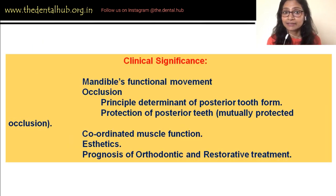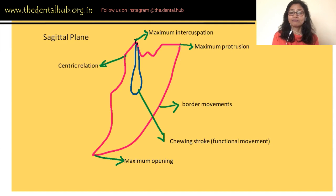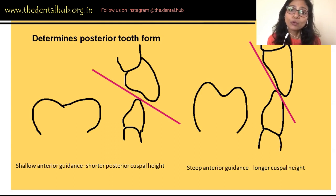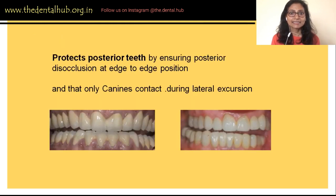The clinical significance of anterior guidance is that it is a principal determinant of the functional movement of the mandible and should cause no hindrance to it. Anterior guidance is part of the envelope of function — the path the mandible follows during function — specifically the superior component of this envelope. It is also a principal determinant of occlusion, ensuring posterior disocclusion during edge-to-edge contact of the anterior teeth. As the mandible moves from centric relation to edge-to-edge position, there will be posterior disocclusion.